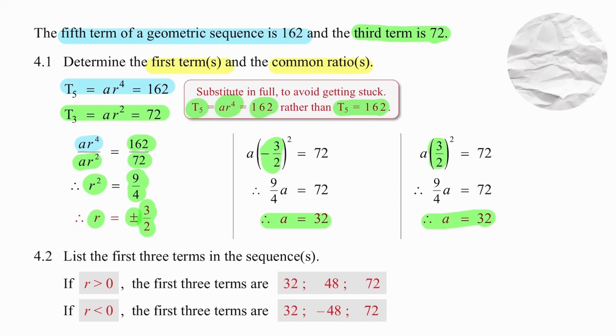So in 4.2, when we are asked to list the three terms of the sequences, I'm going to start with r being positive and I'm stating that so somebody else can follow. My first term is 32 and because my ratio is positive, all my terms will remain positive. I simply multiply through by 3 over 2 each time.